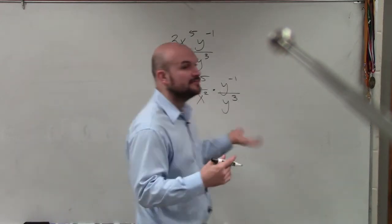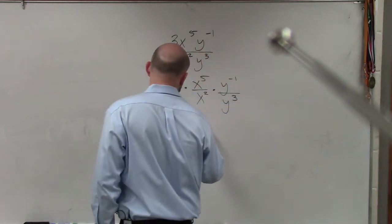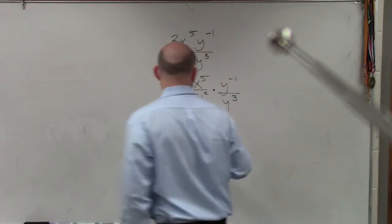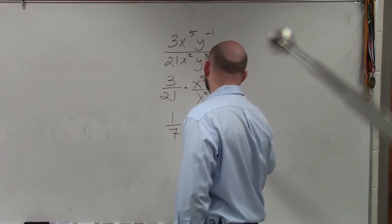Then, if you guys remember, what I said was when you divide exponents, you subtract the powers. So that's times x to the 5 minus 2. And then over here, it's times y to the negative first minus 3.